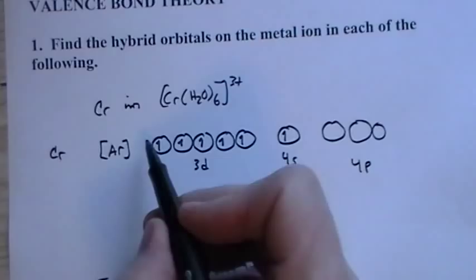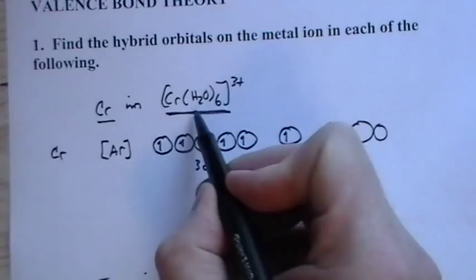So we have chromium here. They want to know the hybrid orbital for chromium in here, in this complex. So we need to know the charge on the chromium. It's plus 3. We can see that.